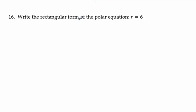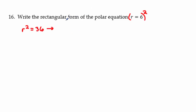Problem 16: find rectangular form of r = 6. We have the option to square both sides, giving r² = 36. Then substitute x² + y² = r² to get x² + y² = 36.